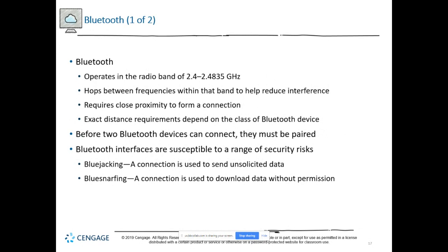Bluetooth is an open wireless technology for transmitting data between fixed and mobile electronic devices over short distances. There are different classes of power. Class 3 goes to a maximum distance of 1 meter. Class 2 goes up to 10 meters, best for mobile devices, phones, and tablets. Class 1 goes up to 100 meters, usually for industrial use.